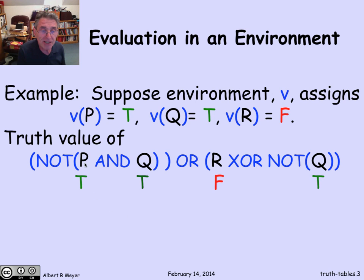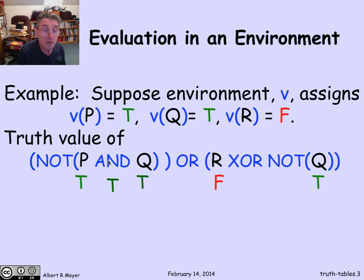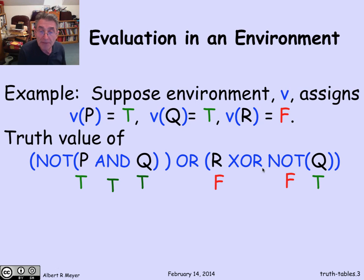Let's begin by attaching the truth values that were given to those particular variables. Now notice that both arms of the AND have been assigned truth values, and they're both true. That means I can assign true to the conjunction formula — the AND formula — by putting the T under that AND, which is the principal connective of this subformula. Looking back at q, since it's true, the NOT of q is false, so I can put false under the NOT. Now both arms of this XOR are defined — they're both false — which means the XOR is false, because it's only supposed to be true if exactly one of them is true.